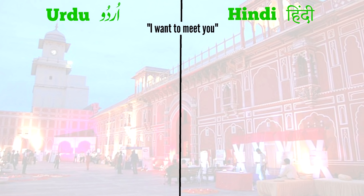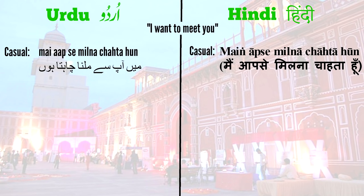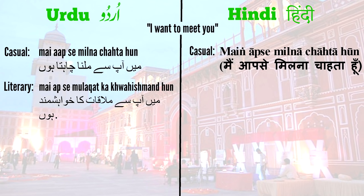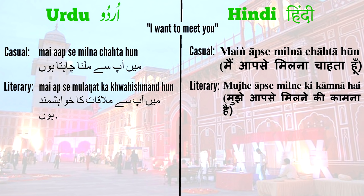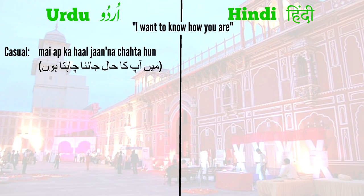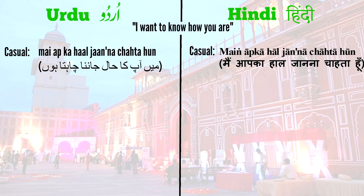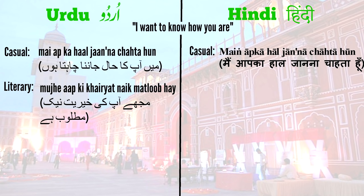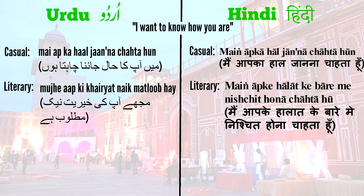The first sentence means 'I want to meet you.' First in casual Urdu, then in casual Hindi. As you can see, the casual forms are quite similar, or almost the same. Now in literary Urdu, and now in literary Hindi. In the literary forms, you can see that the vocabulary is quite different. The next sentence: 'I want to know how you are.' In casual Urdu, then in casual Hindi, then in literary Urdu, and now in literary Hindi. These examples basically show that Hindustani is a single language, but that literary Urdu and literary Hindi have been crafted to reflect the different religious and literary traditions of their speakers.